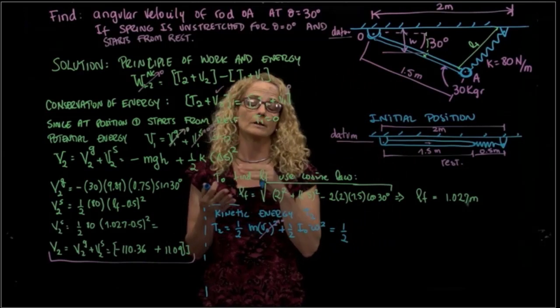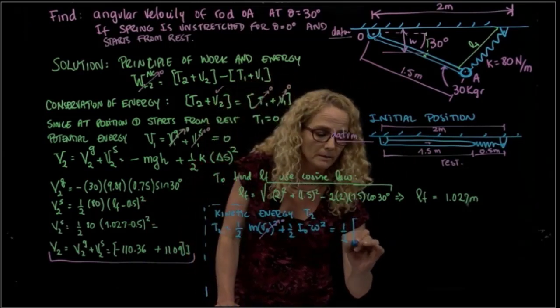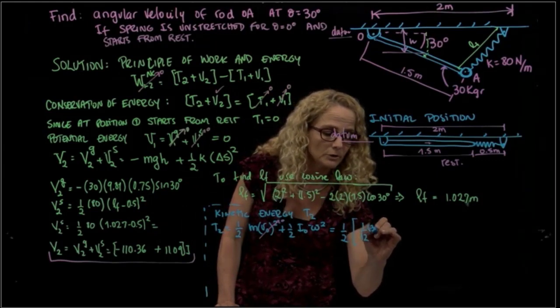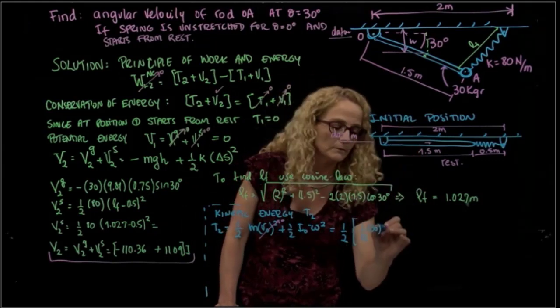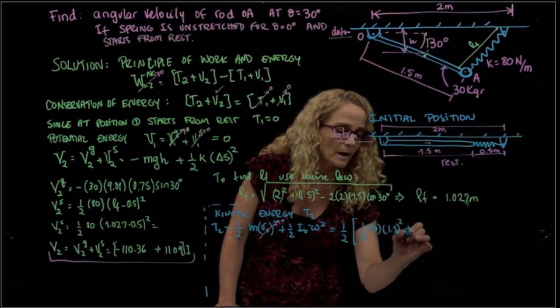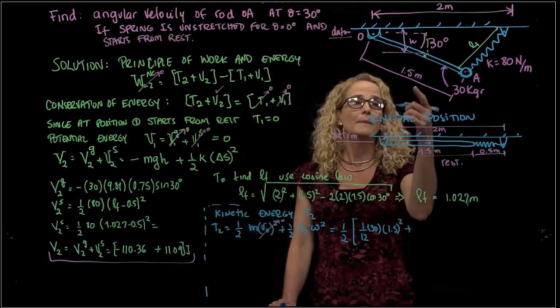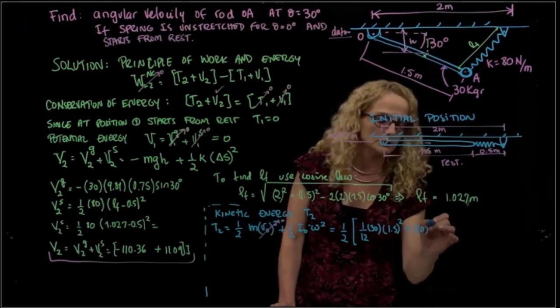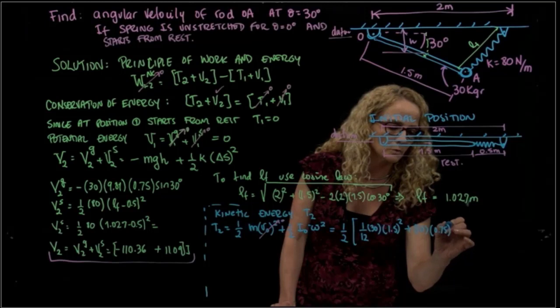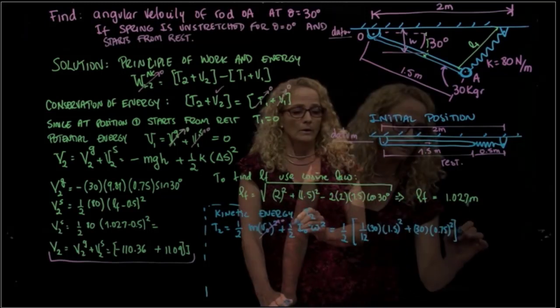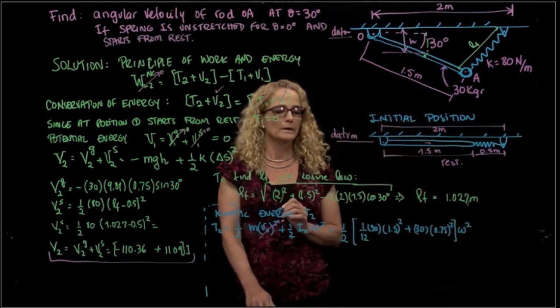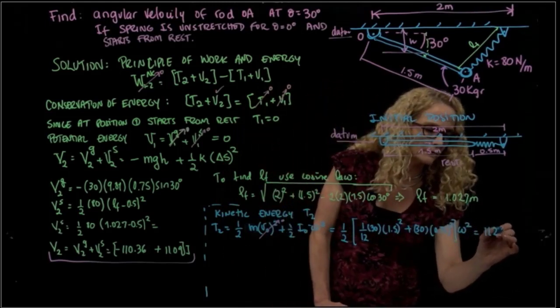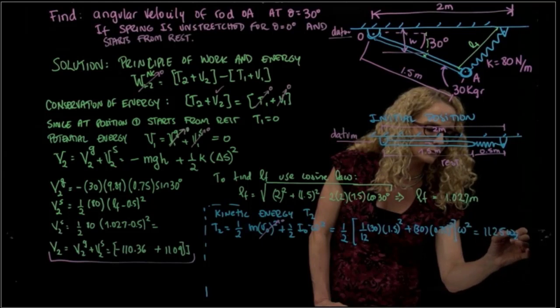So we have to use the parallel axis theorem. So that would be 1/12 mass, which is 30, times 1.5 squared, plus then the mass times the distance, which is 0.75 squared, times omega squared. And if we calculate all that, that gives me 11.25 omega 2 squared.